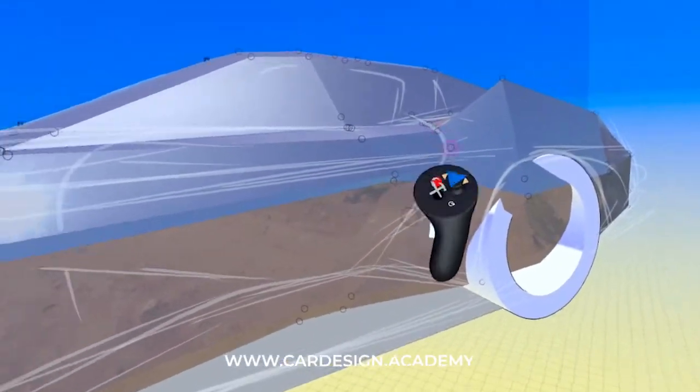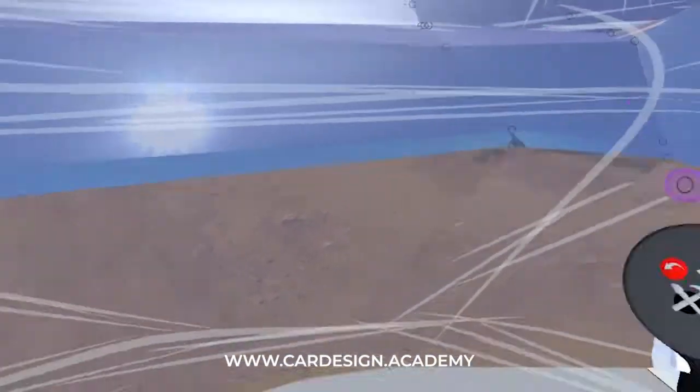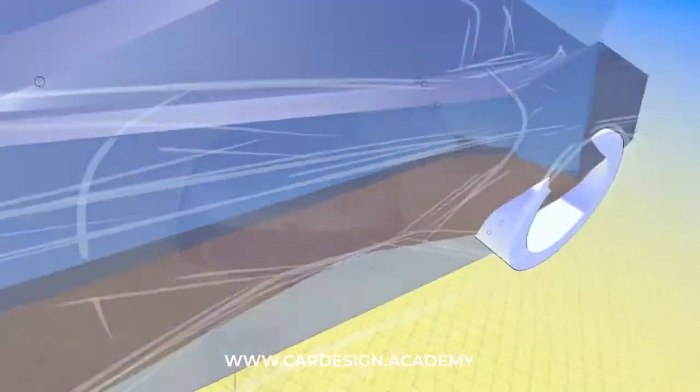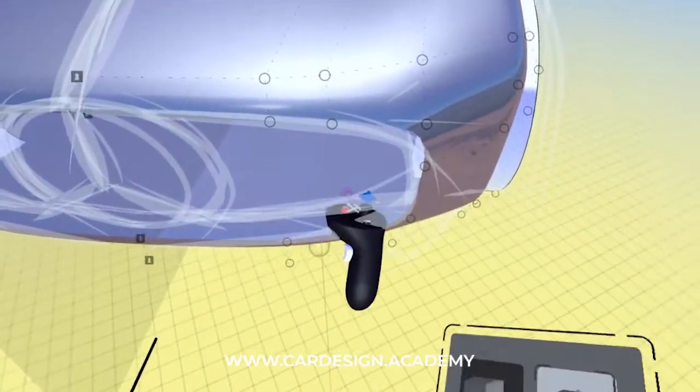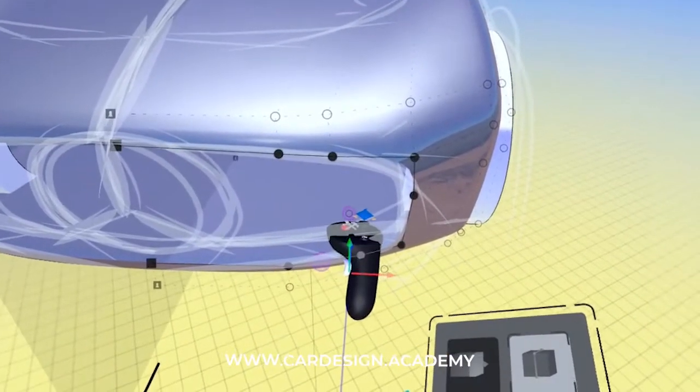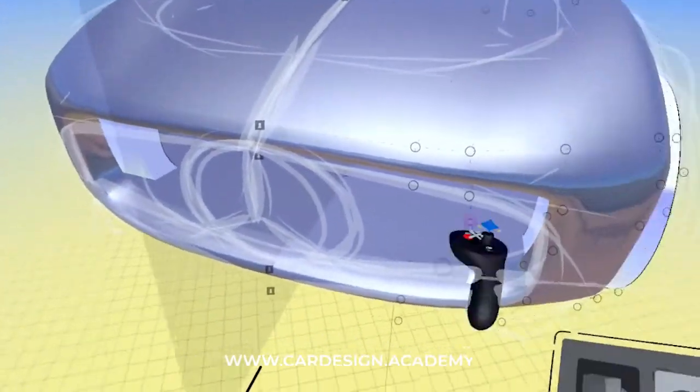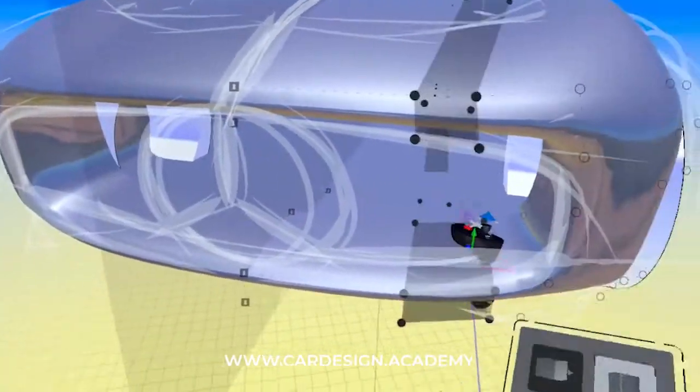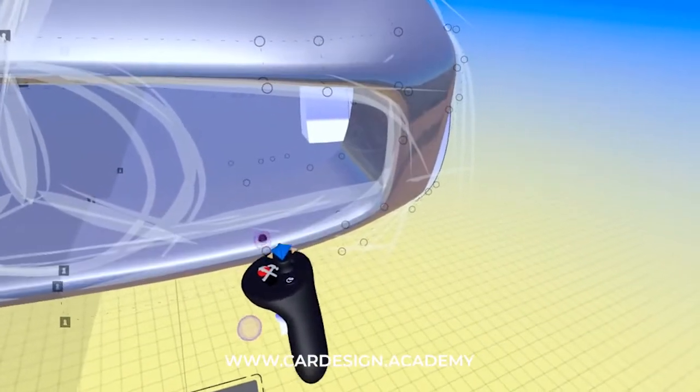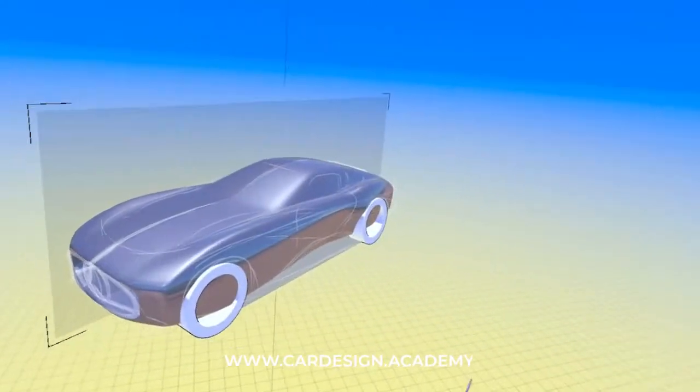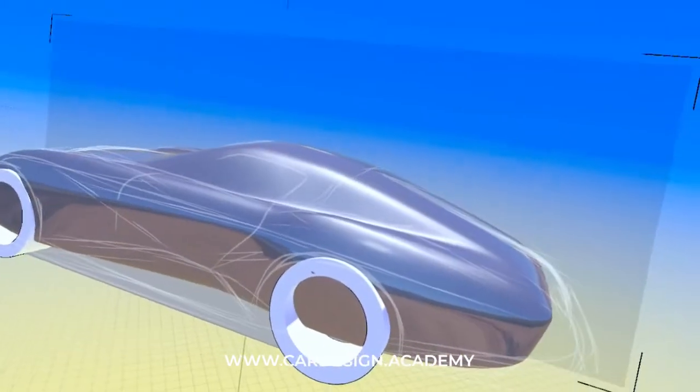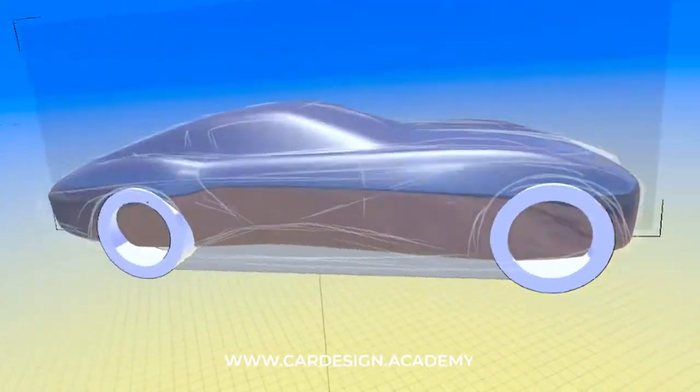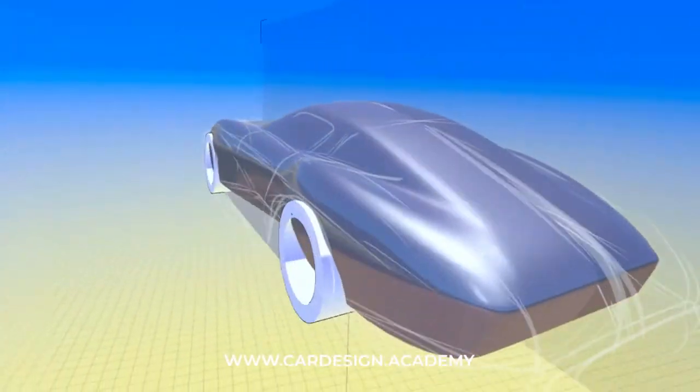One thing about working in sub-D surfaces is you can really get a lot of subtlety in your forms. And then for the intake, I can just grab the whole periphery of it and extrude it in to give it that sort of jet intake look. I can go really deep with it too, put a sharper edge on it. So very quickly I have a nice baseline shape, right?